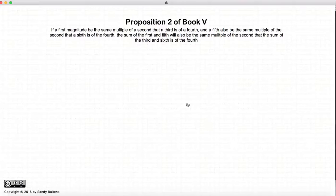I'm going to read you the proposition as it stands because I think it's funny because it's so difficult to understand, and then I'll explain it. If a first magnitude be the same multiple of a second that a third is of the fourth, and a fifth also be the same multiple of the second that a sixth is of the fourth, the sum of the first and the fifth will also be the same multiple of the second that the sum of the third and the sixth is to the fourth.